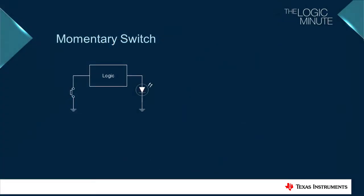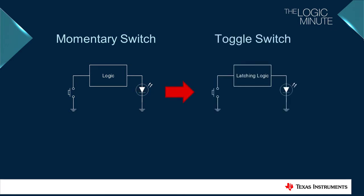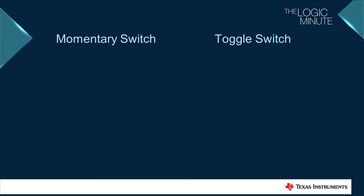Momentary switches only maintain an on state as long as they are held. A toggle switch will latch to the on state on the first button press and will remain in the on state until activated again. Some system functions require a toggle switch, for example the primary power switch for a system.